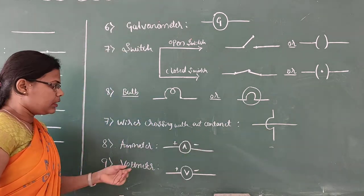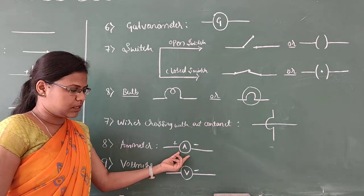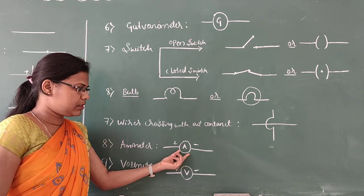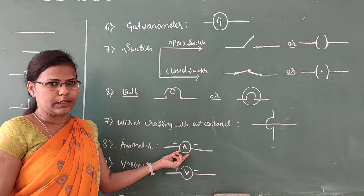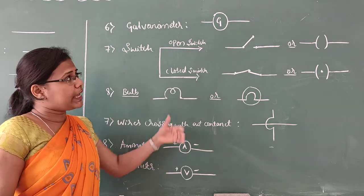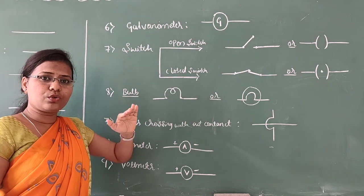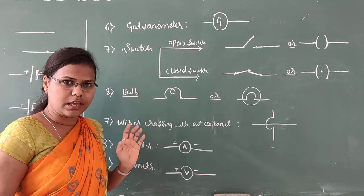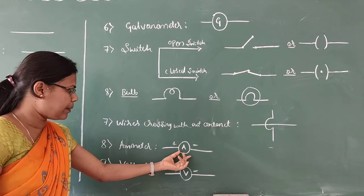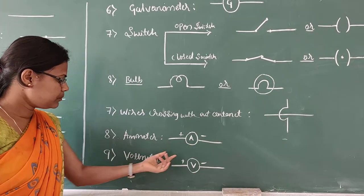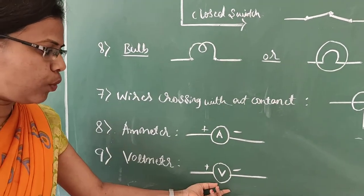This is the symbolic representation of an ammeter. An ammeter is a device used to measure electric current, whereas a galvanometer is used to detect electric current in a circuit. This is the symbol for an ammeter.